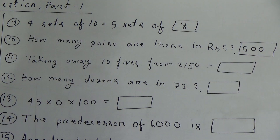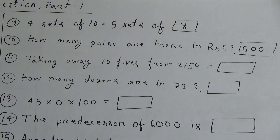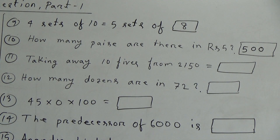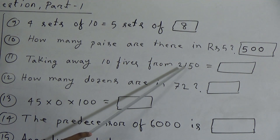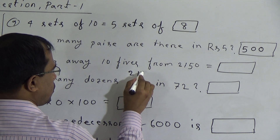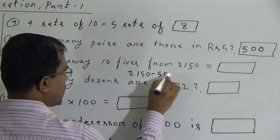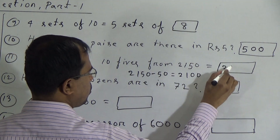Eleventh question: taking away 10 paisa from 2150. Taking away means subtraction. We have to subtract from 2150. If we subtract 50 from 2150 — 5 tens means 50 — this is equal to 2100. So the answer will be 2100.